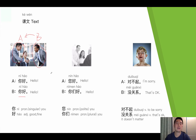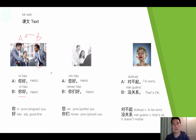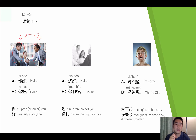In Chinese, greetings are simple — just like English, it's hello to hello. The characters are 你好. Right now, you don't need to remember these characters. You just need to know that we use this to greet each other and how to pronounce it.